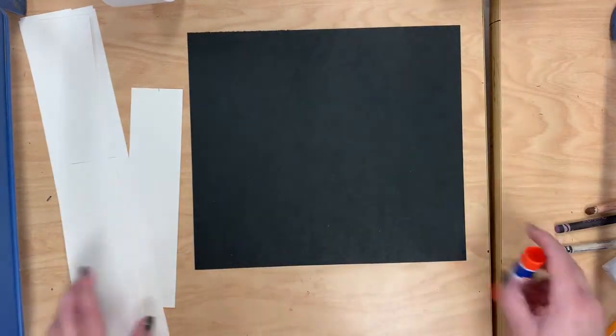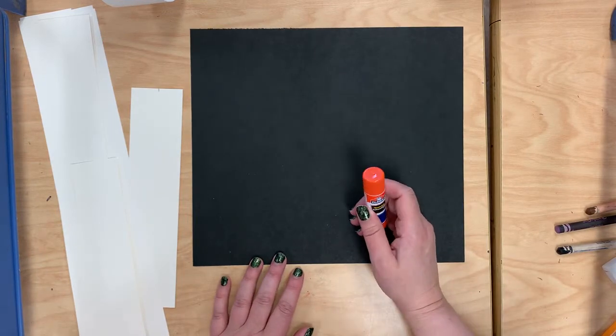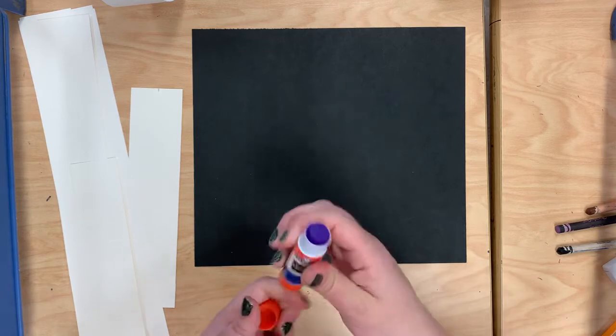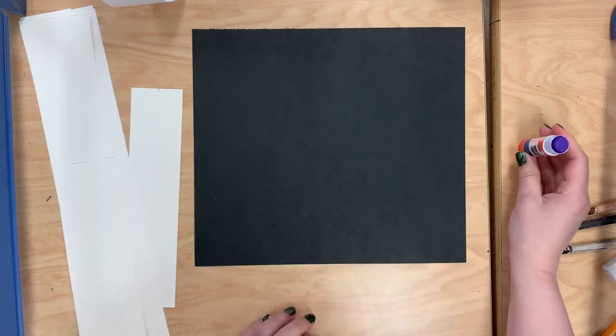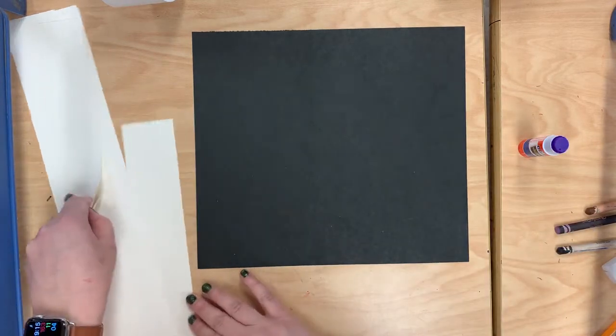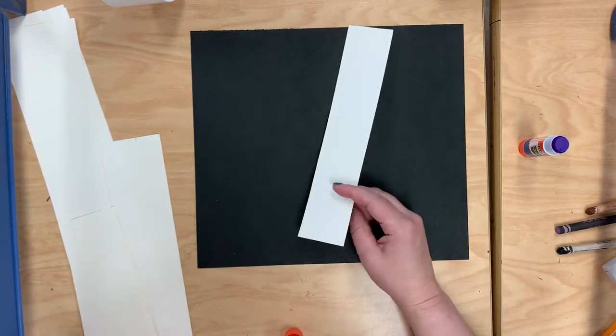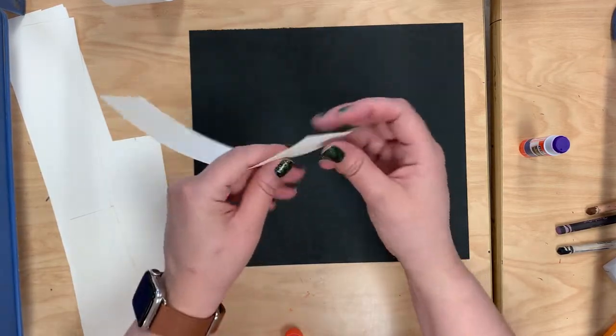So you're also going to be using a glue stick today. Now because we're using a glue stick, we need to make sure we're using enough. Because if we don't use enough, then our strips will just fall off the paper. So the easiest way to get the strip to stick to your paper is to make a tab.